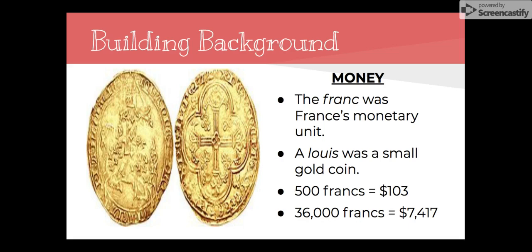There will be some references to money in the story. The franc was France's monetary unit at the time. A louis was a small gold coin, as you can see in the picture. Just for reference, 500 francs at the time in the 1880s was about $103, and 36,000 francs is about $7,400. I'll remind you of these amounts when we read the story, just to give you some perspective.